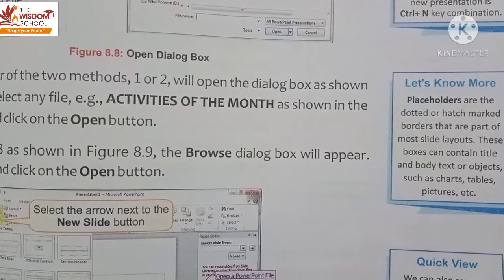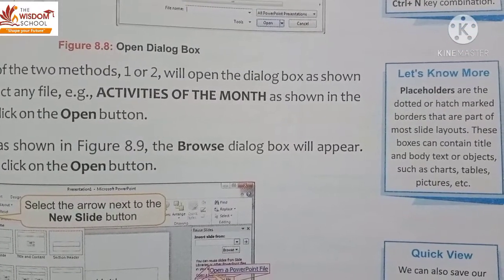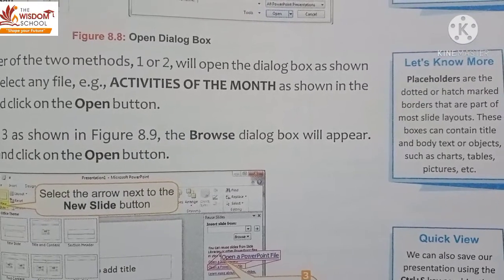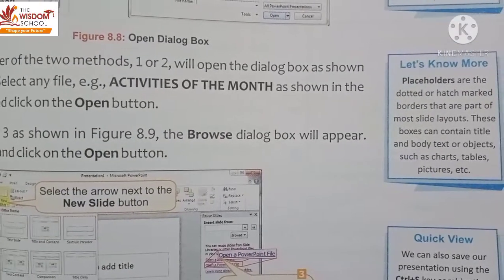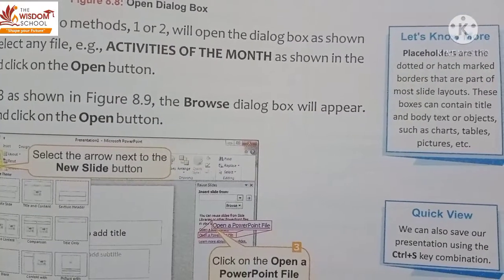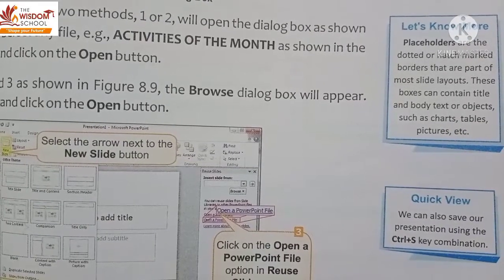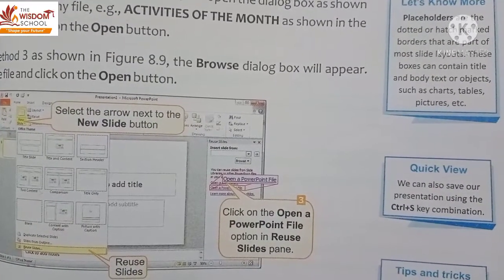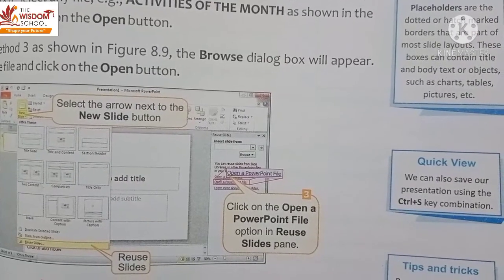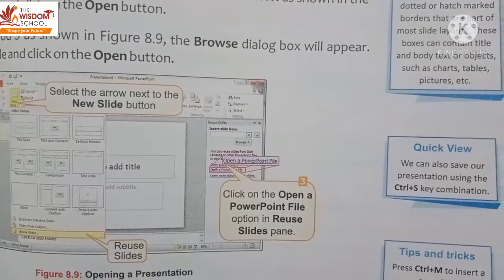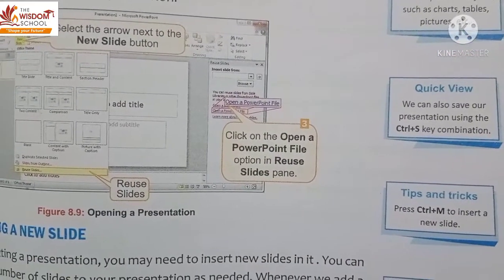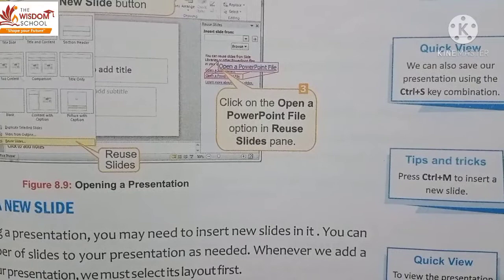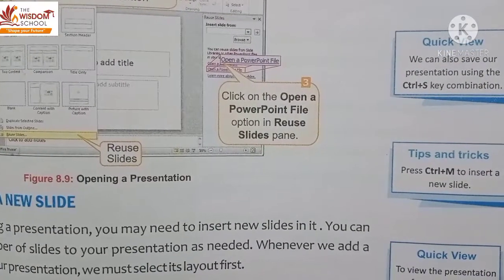Next is placeholder. Placeholders are the dotted and hatched border marks that are part of most slide layouts. These boxes can contain title and body text, or objects such as charts, tables, pictures, etc. We can also save our presentation using the Ctrl+S shortcut key combination.